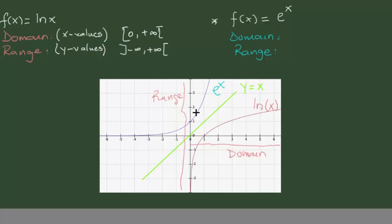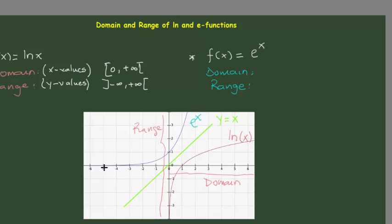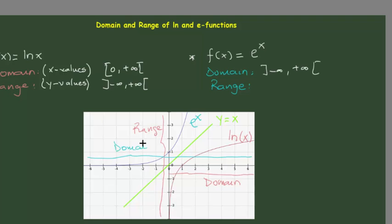Now we will talk about the e-function. This is the e-function right here. As you can see, its domain is covering the whole range — from minus infinity. It really doesn't matter what value you plug in for x — you're going to have a positive output. So its domain here will be from minus infinity to plus infinity. We're going all along the x-axis. This is the domain of the e-function.